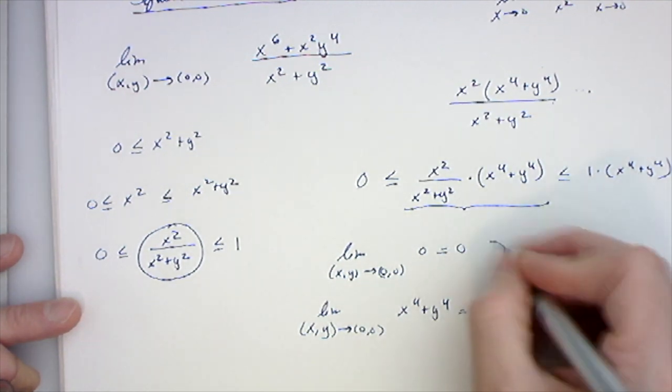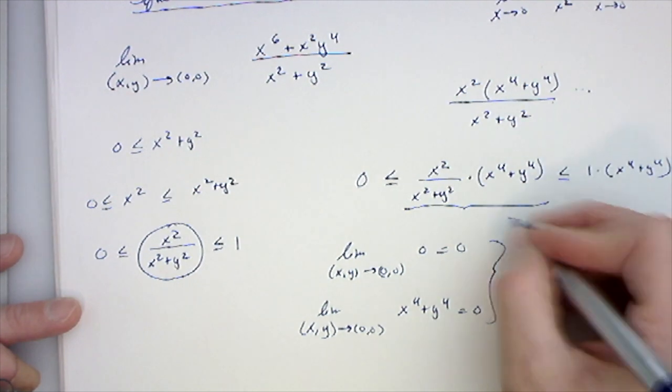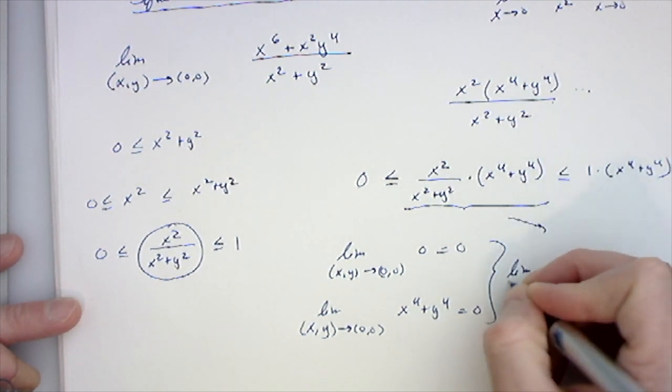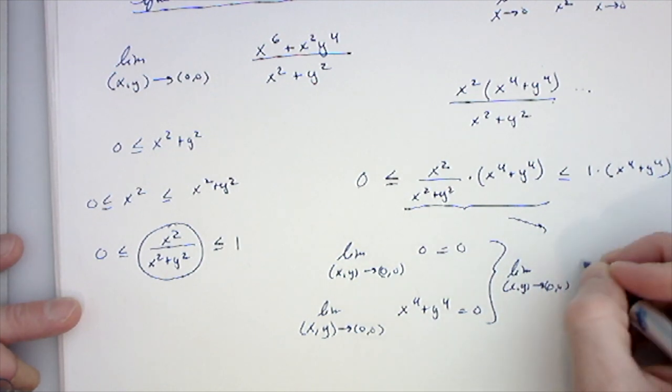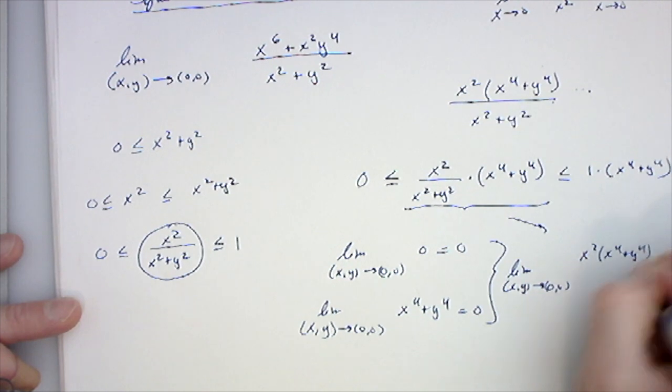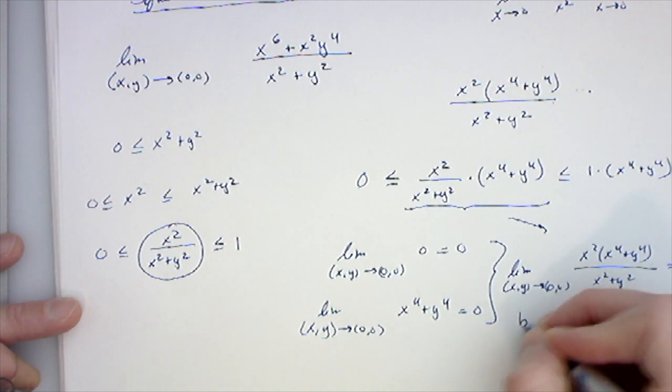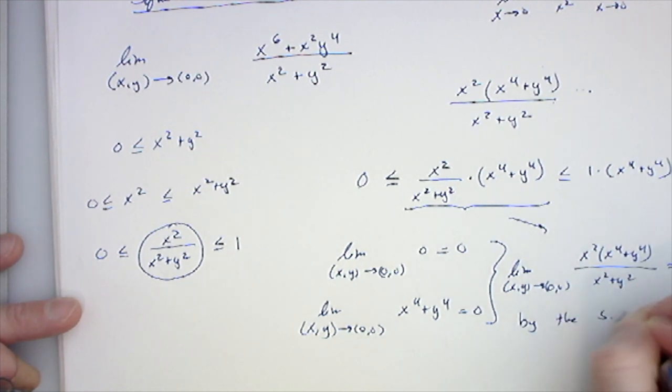And since this is 0 and this is 0, it means that the middle thing, limit as x, y goes to 0, 0 of x squared times x to the 4th plus y to the 4th over x squared plus y squared, must equal 0 by the squeeze theorem.